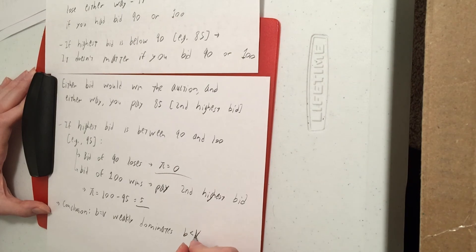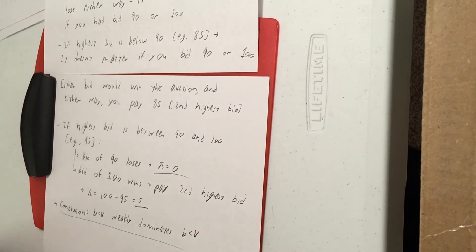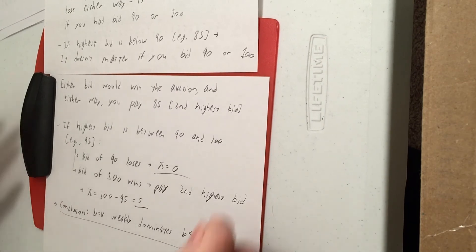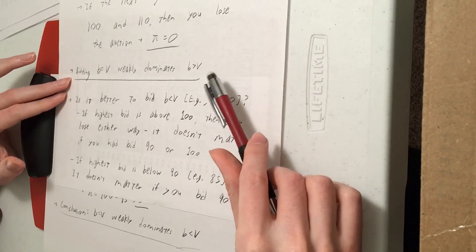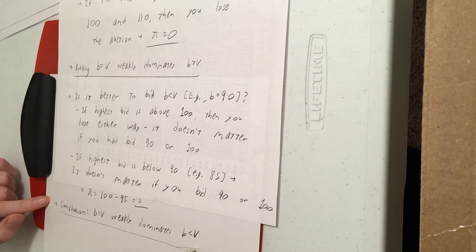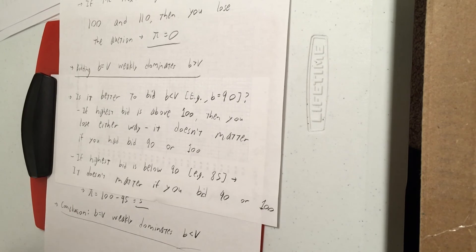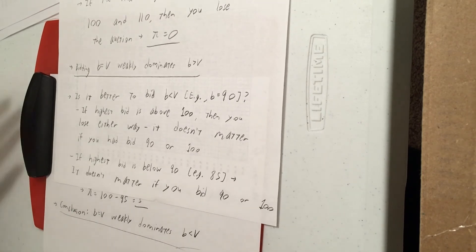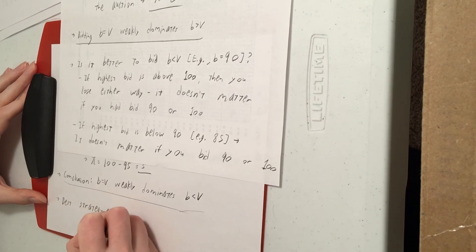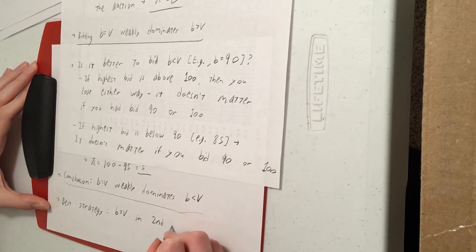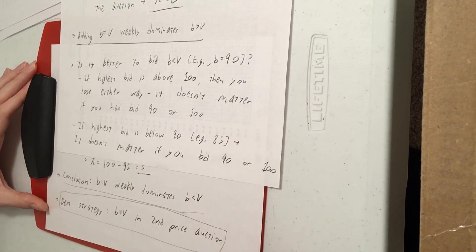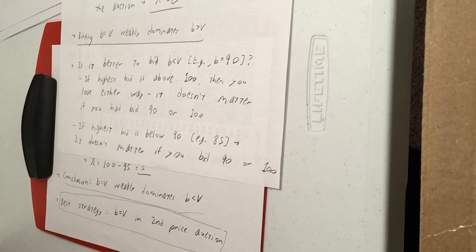So unlike a first-price auction, here underbidding is no longer optimal. We established earlier that bidding your value weakly dominates overbidding, and we've just established it also weakly dominates underbidding. That means the best option is to bid your value. So in the victory game, if your group is told the value of the object is 104, you should have bid 104.